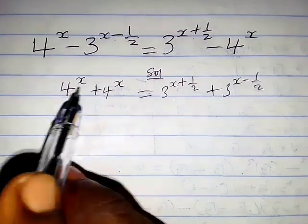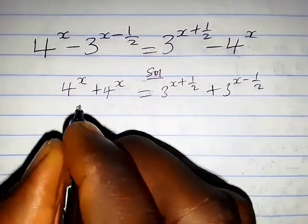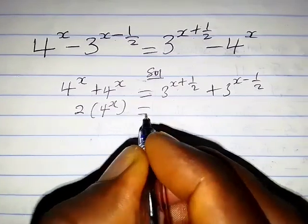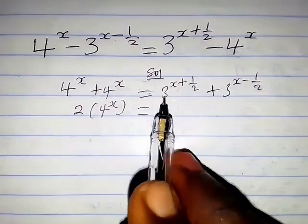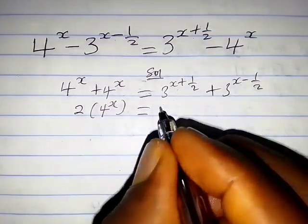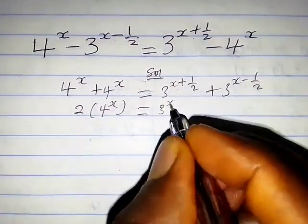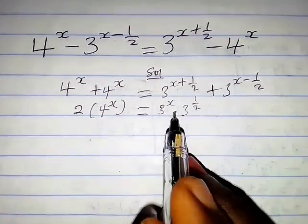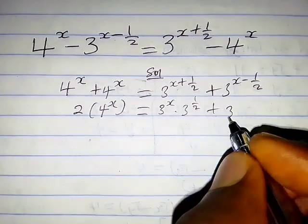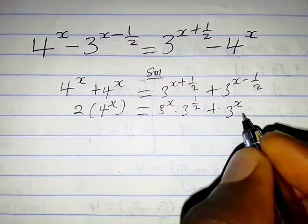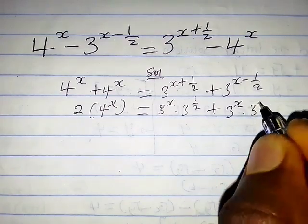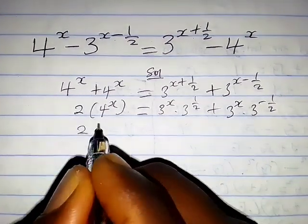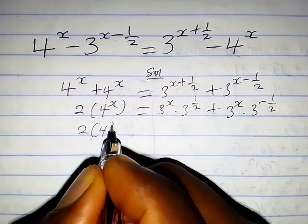We have these two terms: 2 times 4 raised to the power x, which equals — by the laws of exponents — 3 raised to the power x, times 3 raised to the power one-half, plus 3 raised to the power negative one-half. So now let's proceed further, so we're going to have 2 times 4 raised to the power x.